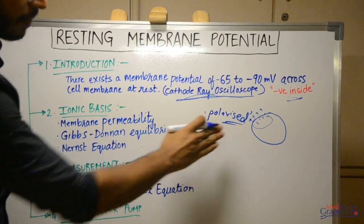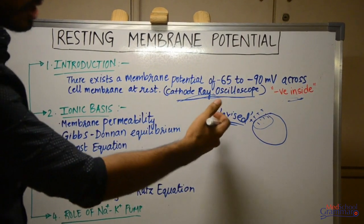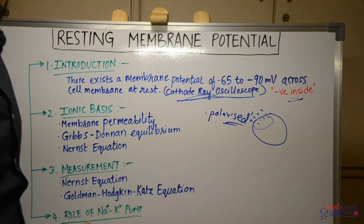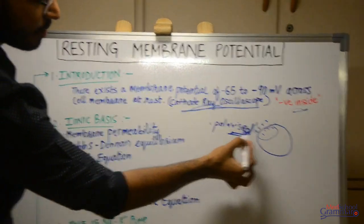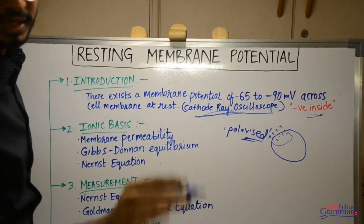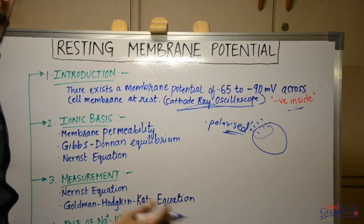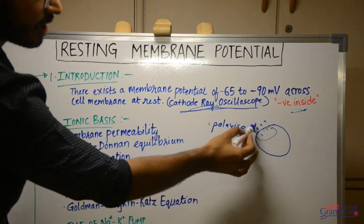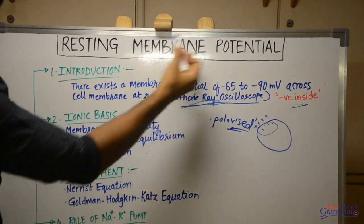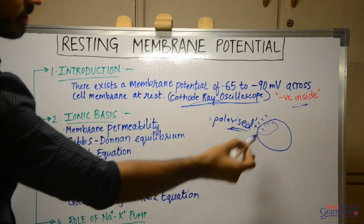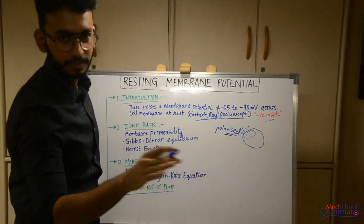This word is important because when we talk about action potential in the next video, we'll talk about two other terms — depolarization and repolarization. The word 'polarized' means the normal resting membrane potential is in picture right now. So depolarization and repolarization are basically changes in the resting membrane potential.